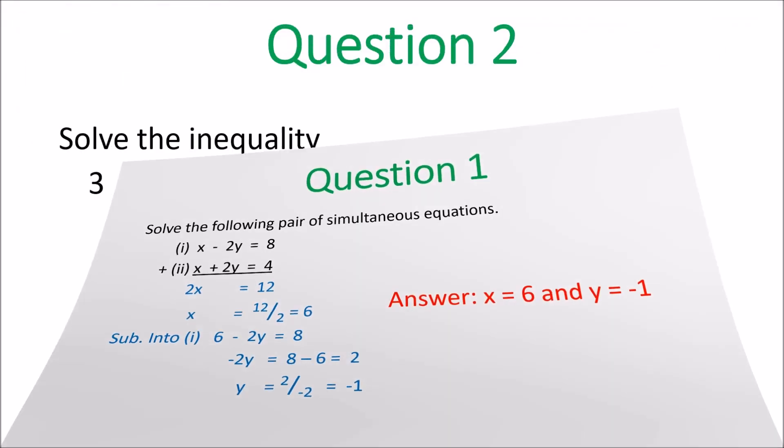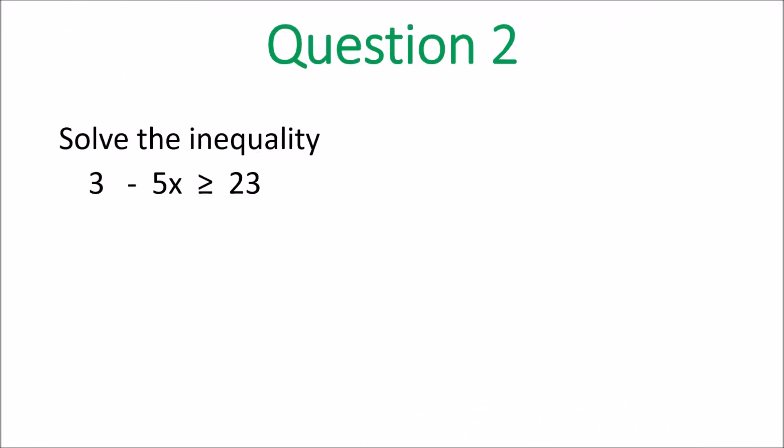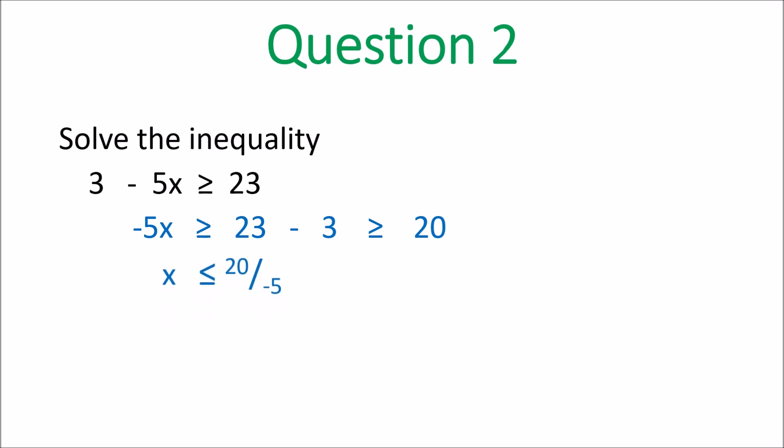Question 2, solve the inequality. You want to isolate the negative 5x: negative 5x is greater than or equal to 23 minus 3, which is greater than or equal to 20. So negative 5x is greater than or equal to 20. You divide by negative 5 and switch the inequality around, so x is less than or equal to 20 divided by negative 5. x is less than or equal to negative 4.